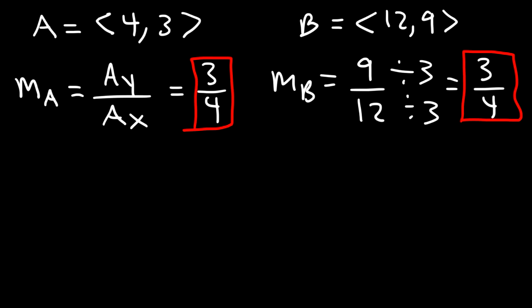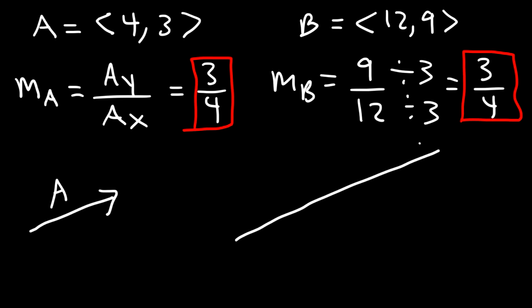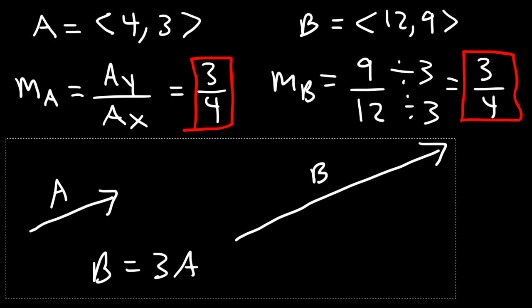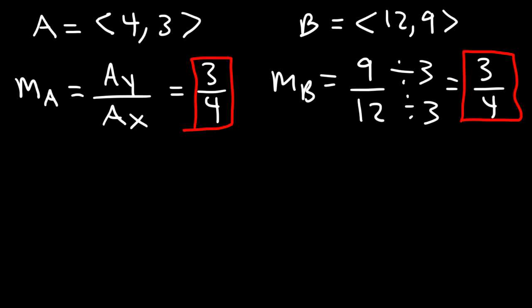But are they equal? Vector A would be about this long, but vector B would be 3 times as long compared to vector A, because if you compare 12 and 4, it's 3 times as great, and the same is true with 3 and 9. So A and B are parallel, but they're not equal vectors — B is much larger than A. In fact, B is simply 3 times the value of A. By analyzing the slopes, you can quickly tell if two vectors are parallel, perpendicular, or neither.